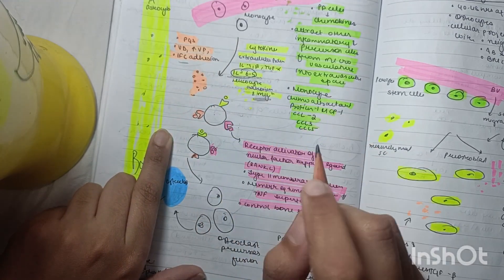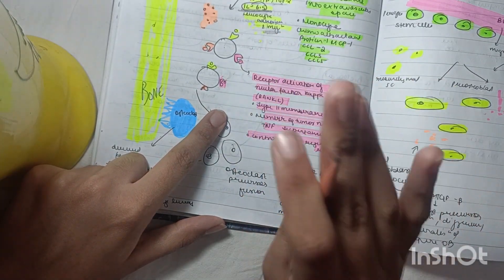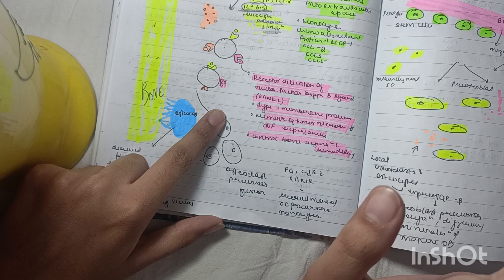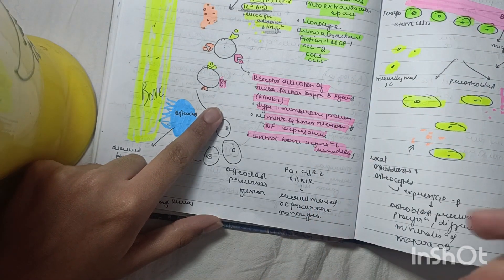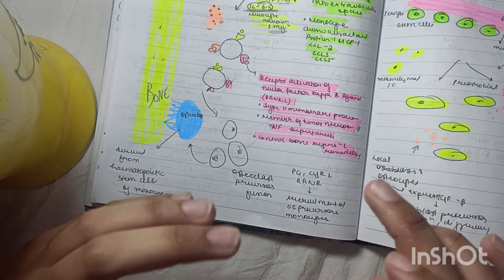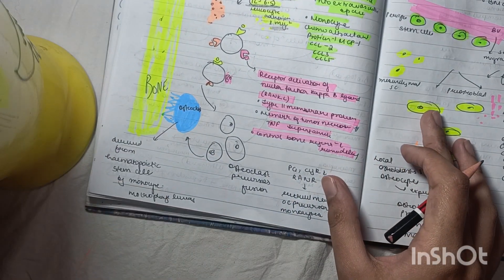RANKL - receptor activator of nuclear factor kappa-beta ligand - is a type 2 membrane protein and member of the tumor necrosis factor superfamily. It controls bone remodeling.